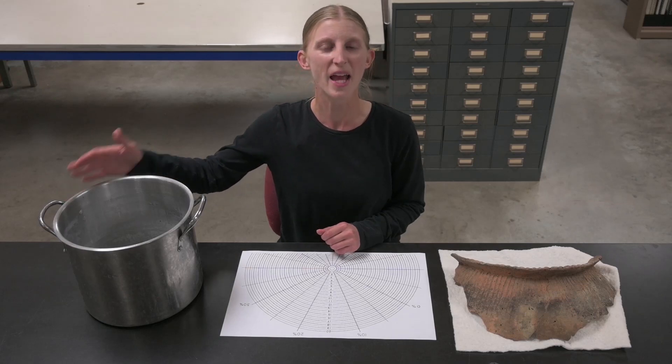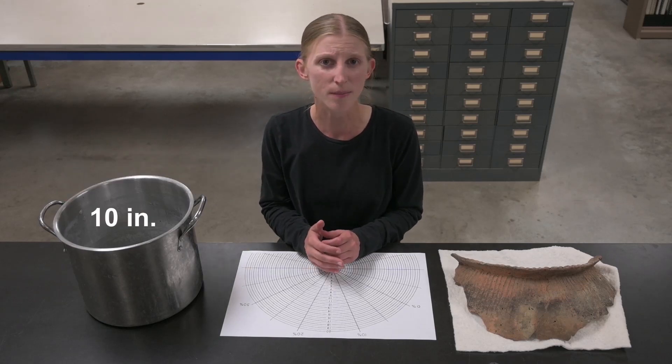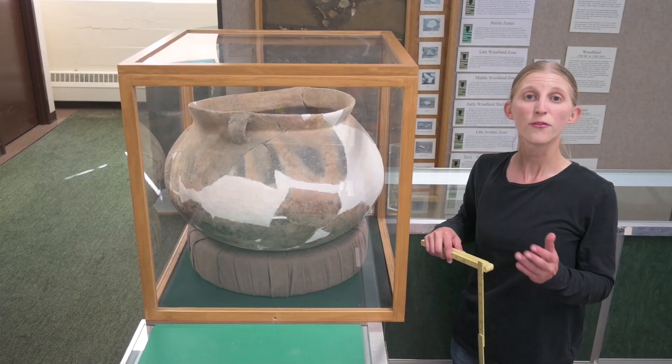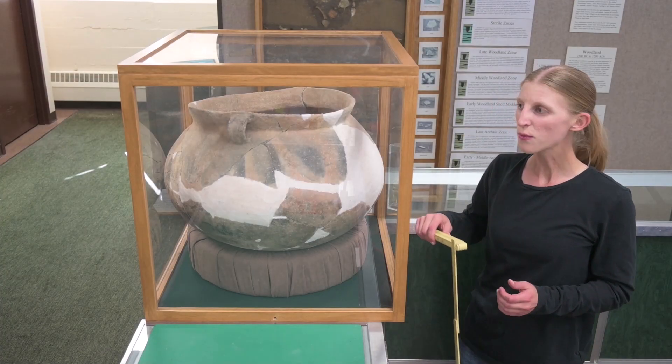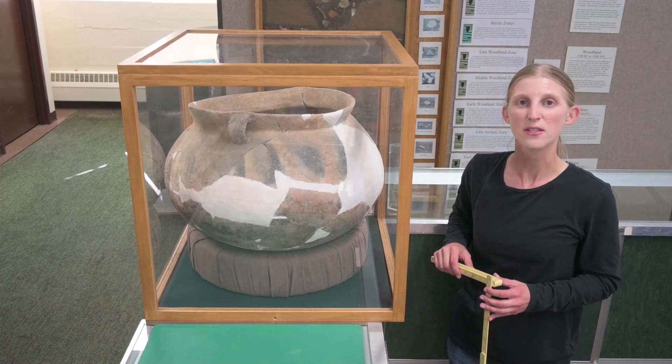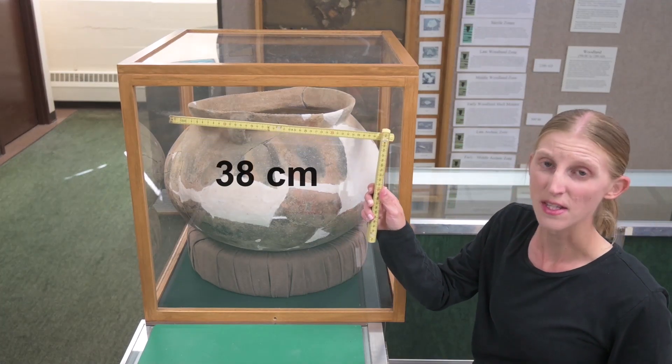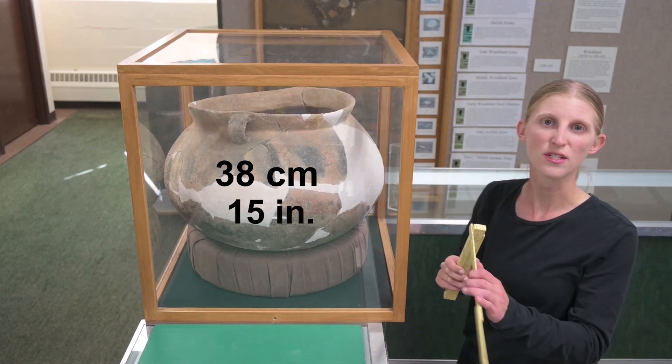This modern metal pot has a diameter of 10 inches, or about 25 and a half centimeters. For comparison, this reconstructed late pre-contact oneota vessel has a diameter of about 38 centimeters, or 15 inches.